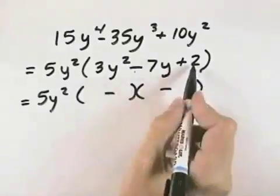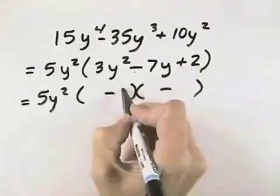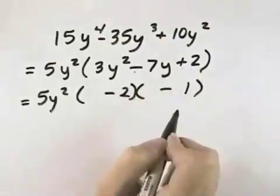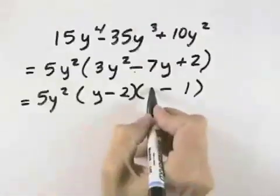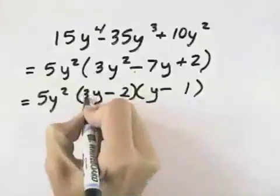Now we know to get a 2 on the last term, we have to have a 2 and a 1, although we could reverse it. Then for 3y², we know we need a y in each space, and then a 3 and a 1.